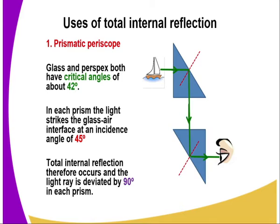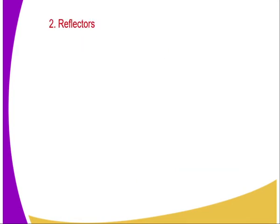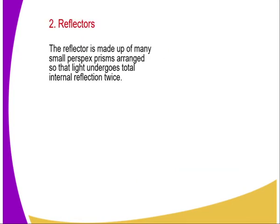An obstacle cannot limit the vision of an observer who has a periscope. Why? Because there is total internal refraction which takes place, and this can help an observer to view objects beyond the obstacle.